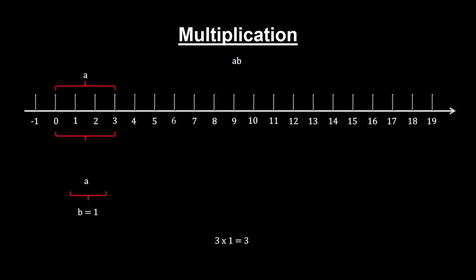Doing it one time leaves it unchanged. Thus the number one is the multiplicative identity, like zero was the additive identity.